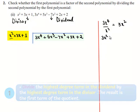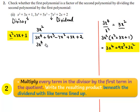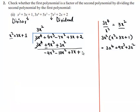So 3x squared multiplied by the divisor, which is x squared plus 3x plus 1, gives 3x to the power 4 plus 9x cubed plus 3x squared. So 3x squared can be written at the place of the quotient and this product can be written here. On subtracting, 3x to the power 4 and minus 3x to the power 4 will be cancelled. 5x cubed minus 9x cubed is minus 4x cubed, and minus 7x squared minus 3x squared is minus 10x squared. This becomes 2x plus 2. Now the new dividend is minus 4x cubed minus 10x squared plus 2x plus 2.